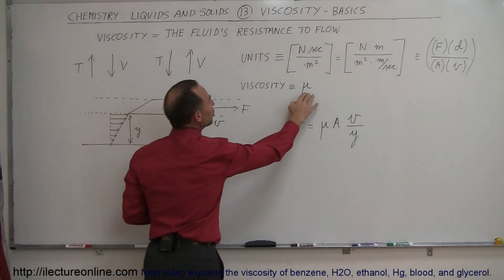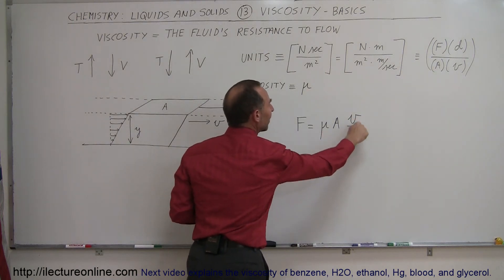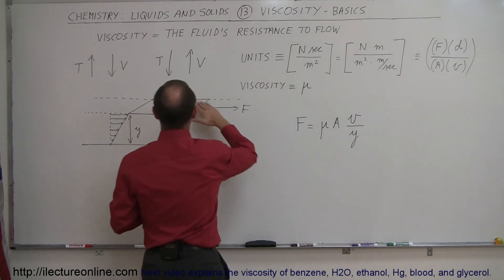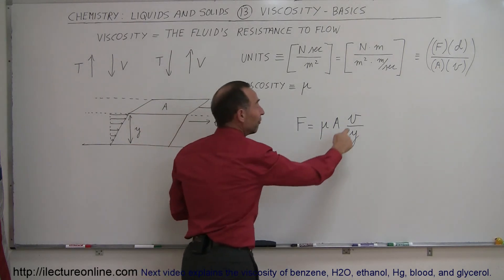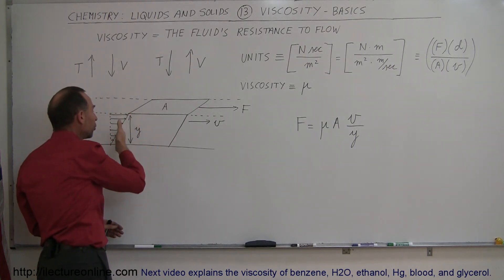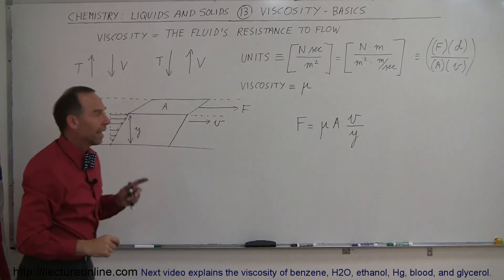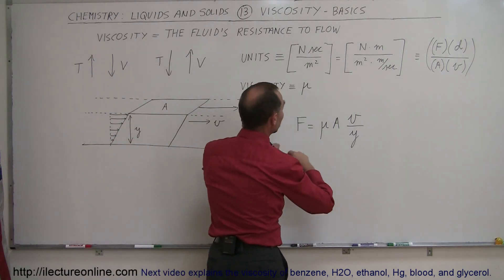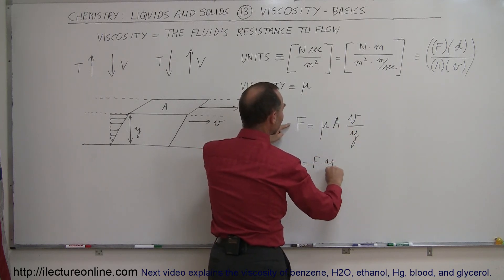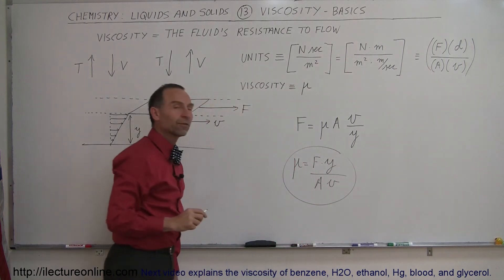If you write viscosity as the letter mu, then the force required to pull is equal to the viscosity times the cross-sectional area times the velocity divided by the distance from the object to the bottom of the container. This makes sense: the greater the viscosity, the harder you have to pull; the larger the area, the more force needed; the faster you're pulling, the more force needed. A greater distance gives a smaller velocity gradient, so bigger y means smaller force. Rearranging, mu equals the force times the depth divided by the cross-sectional area times the velocity — that's how you determine the viscosity of a fluid.